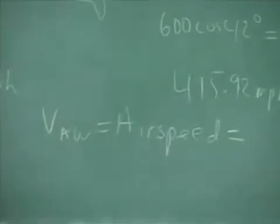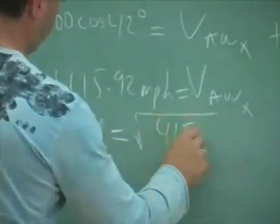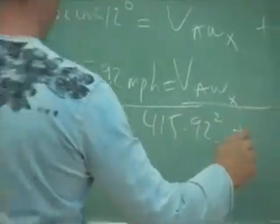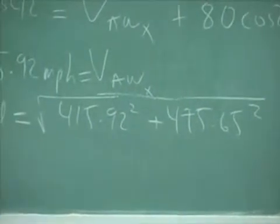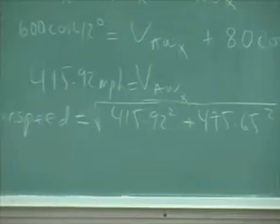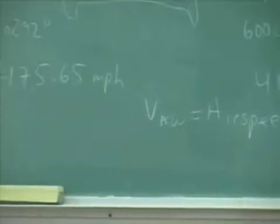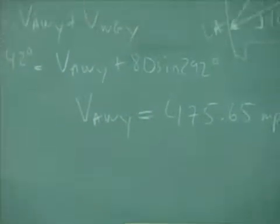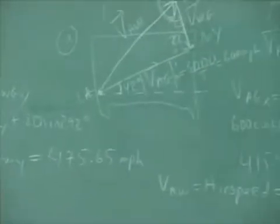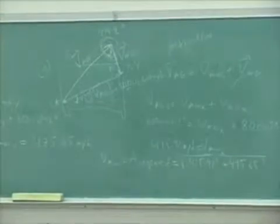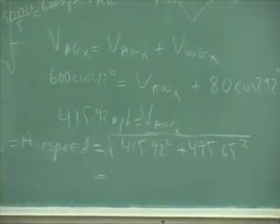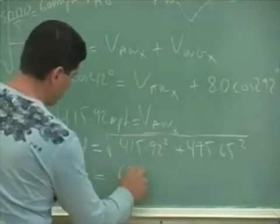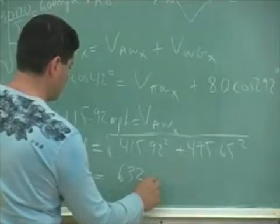That's the square root of that squared plus that squared. I wonder if it's going to be larger than 600 or is it going to be less than 600? Because your effective speed was 600. 632. 632. Point? 631.8. Oh.